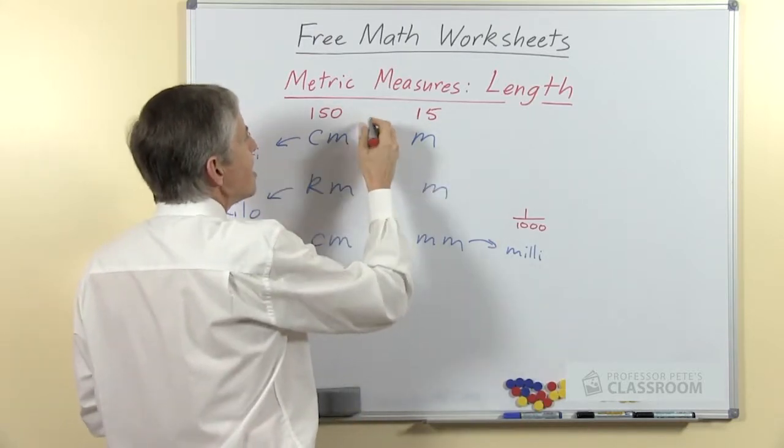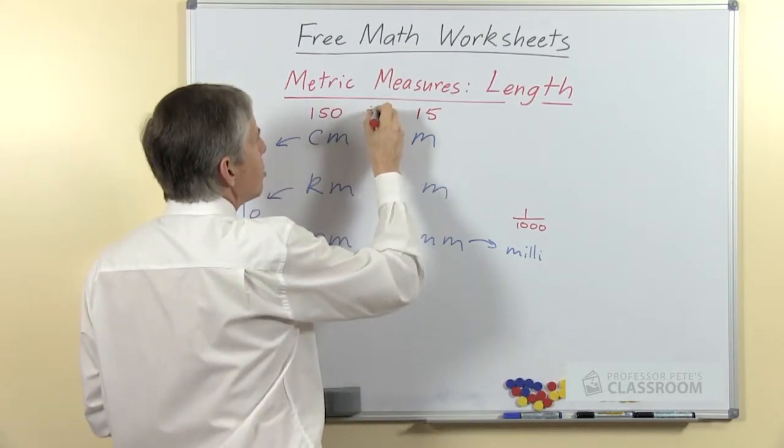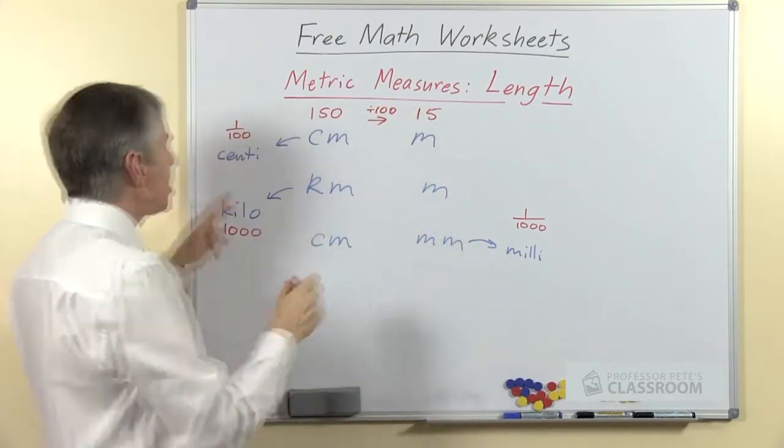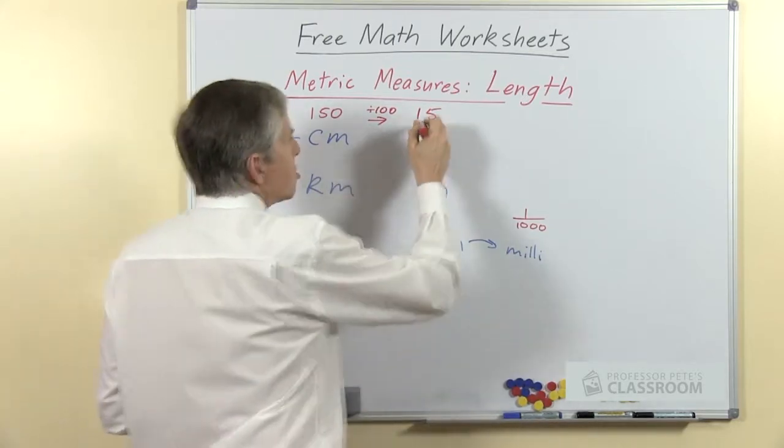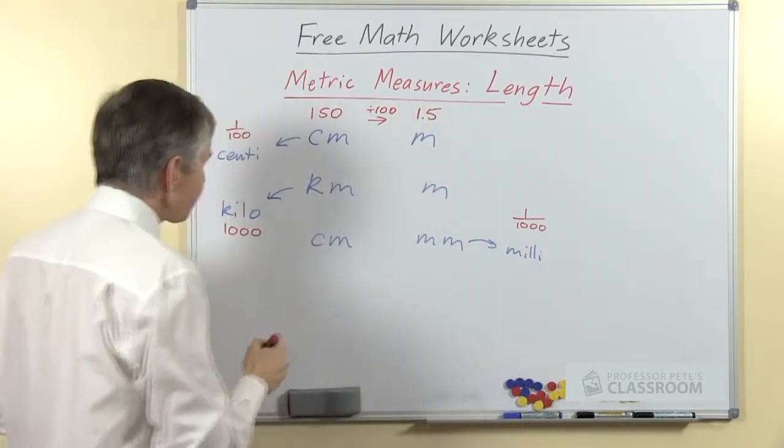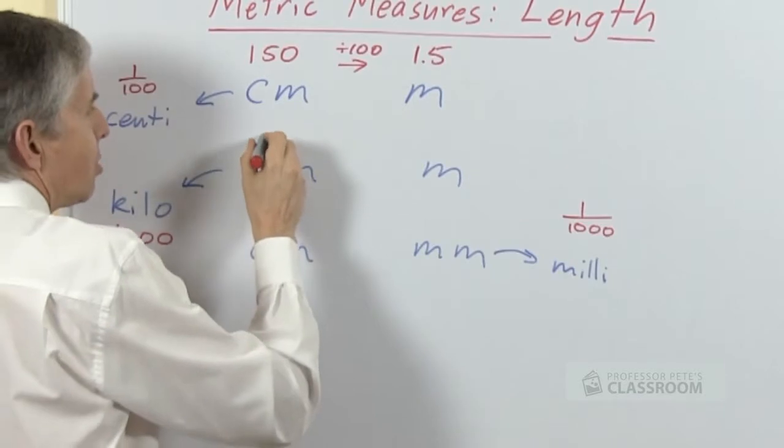Centimeters to meters, the conversion factor here is divided by 100, because these are hundredths of a meter. 150 hundredths is how much? This will be 1.5.